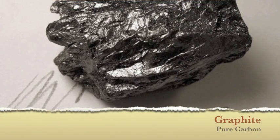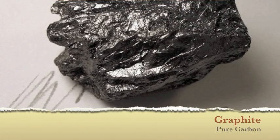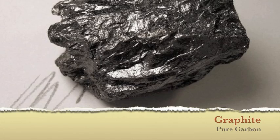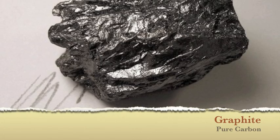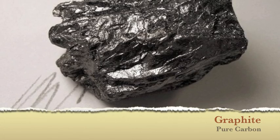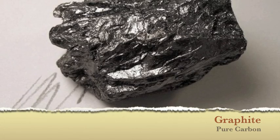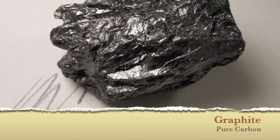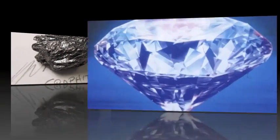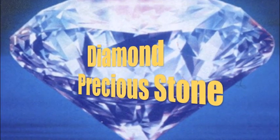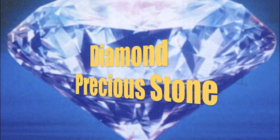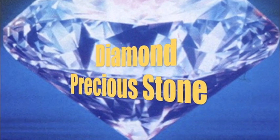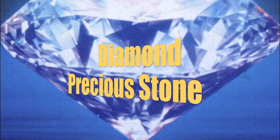The chemical composition and crystal structure determine what mineral something is. For example, graphite and diamonds are both made of pure carbon, but they have different crystal structures that make them different minerals.